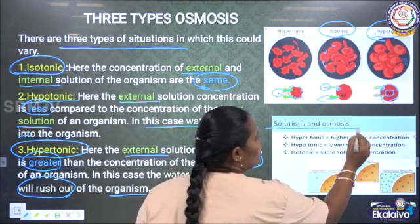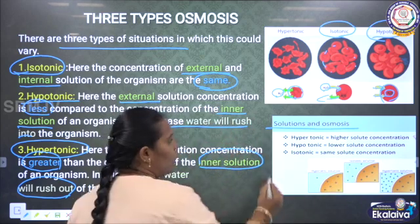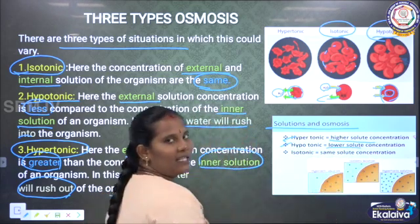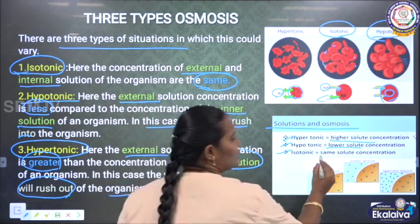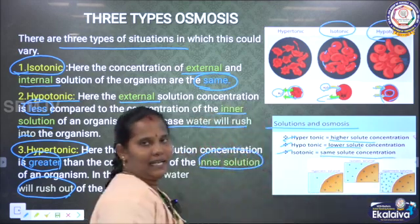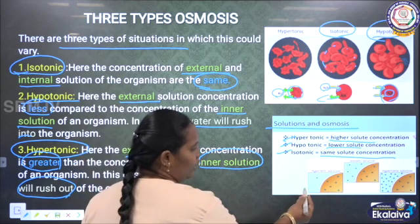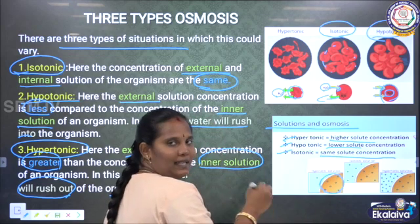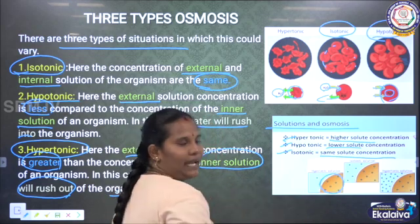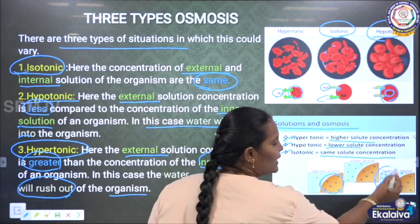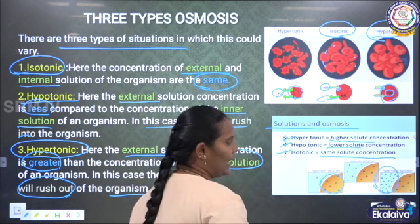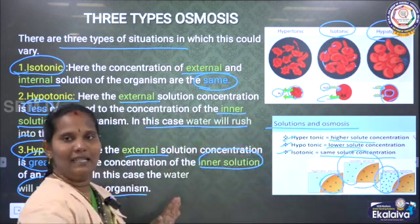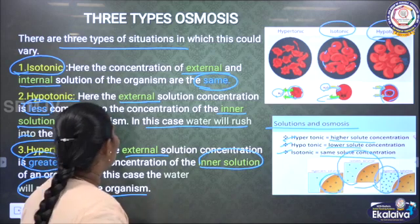To summarize: hyper means higher solution concentration; hypo means lower solution concentration; isotonic means same solute concentration on both sides. In hypo, the inside of the cell has high concentration compared to outside. In hyper, the outside concentration is high compared to inside. In iso, both sides are equal.